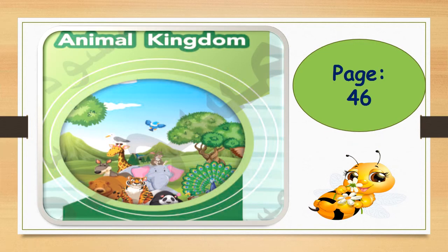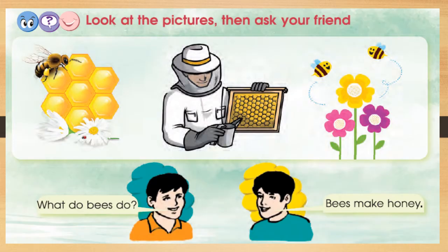Open your pupils book. Look at the pictures, then ask your friend. Nasser and Hamad talked together. Nasser said, 'What do bees do?' Hamad said, 'Bees make honey.' What do beekeepers do? Beekeepers collect honey. What is the language of bees? The language of bees is dancing, and they fly from flower to flower to make honey.